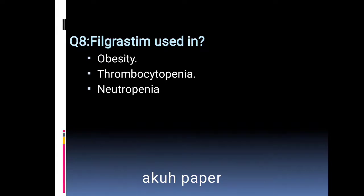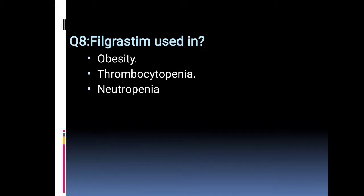Filgrastim is used in obesity, thrombocytopenia, or neutropenia. You must know what class this drug belongs to before choosing the right answer.